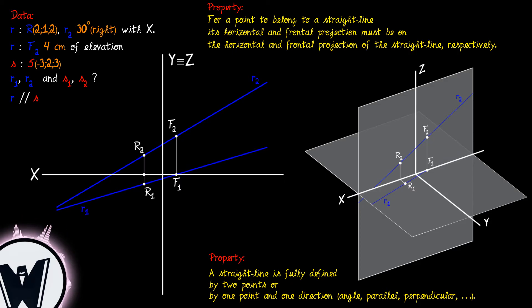The projections of the straight line S can now be found using point S of our data and the direction of the straight line R since they are parallel, representing the coordinates of point S and the projections of the straight line S.